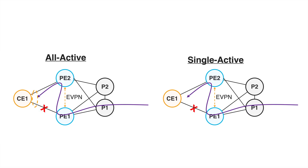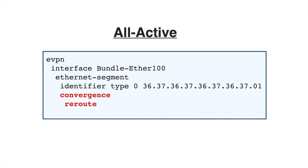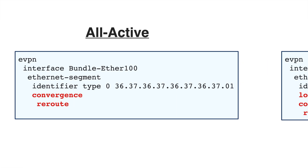In 7.3.1, PE1 pre-programs the backup path over PE2 towards CE1. When a link failure occurs between CE1 and PE1, traffic arriving from the remote end at PE1 is redirected over PE2 to the access. This rapidly speeds up convergence for all EVPN scenarios and works for both all-active and single-active — the most important enhancement in 7.3.1. The configuration is very basic: under the Ethernet segment configuration, you simply configure convergence and reroute, for both all-active and single-active.